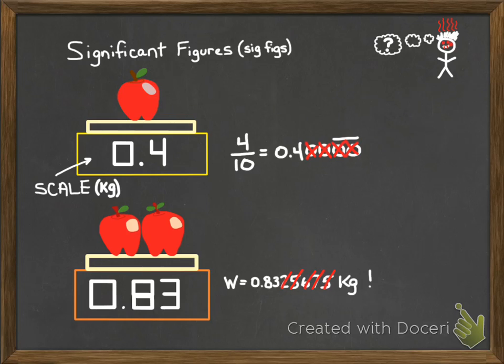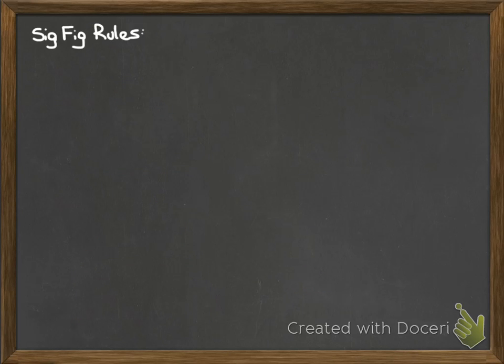That's why we do sig figs. Now let's take a look at the sig fig rules. Let's start with the golden rule — the easiest one to remember — which is basically that all non-zero digits are significant.